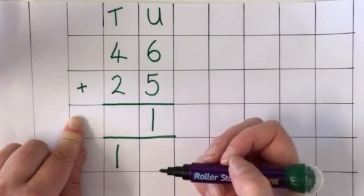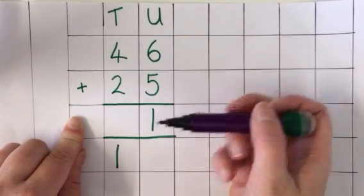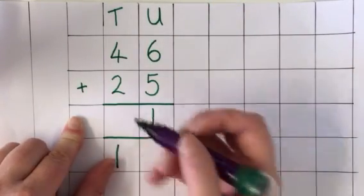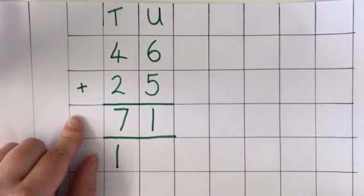So now I'm going to add the tens column. I've got 4 and 2 which totals 6 tens, and this one makes 7 tens. So the answer on this occasion is 71.